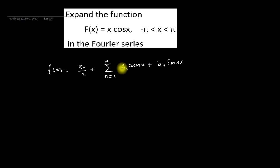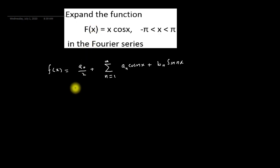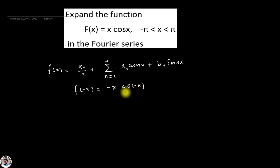In this equation we have to find the values of a₀, aₙ, and bₙ. Before finding these values, we have to check whether this function is an even function or an odd function. In order to check, we replace x by minus x, giving f(-x) = (-x)·cos(-x).